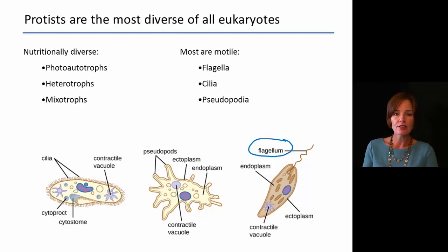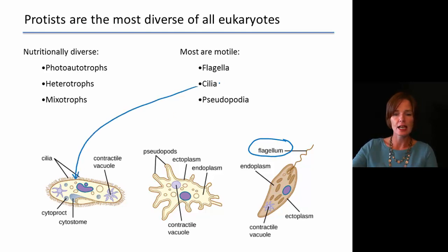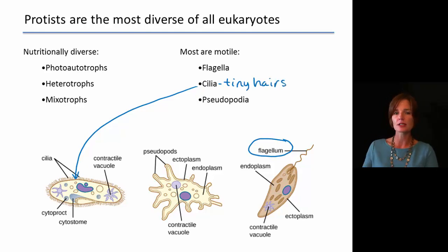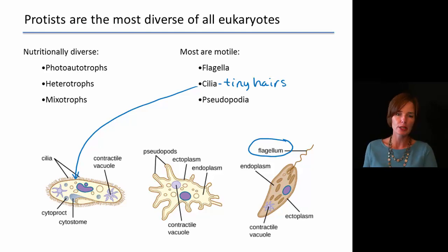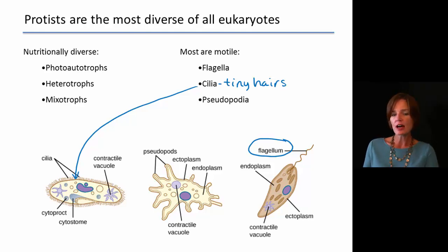We can also have things called cilia. Cilia are more like tiny hairs that coat the surface of the organism — there would be hundreds of them probably coating the surface. They provide movement of the entire cell.